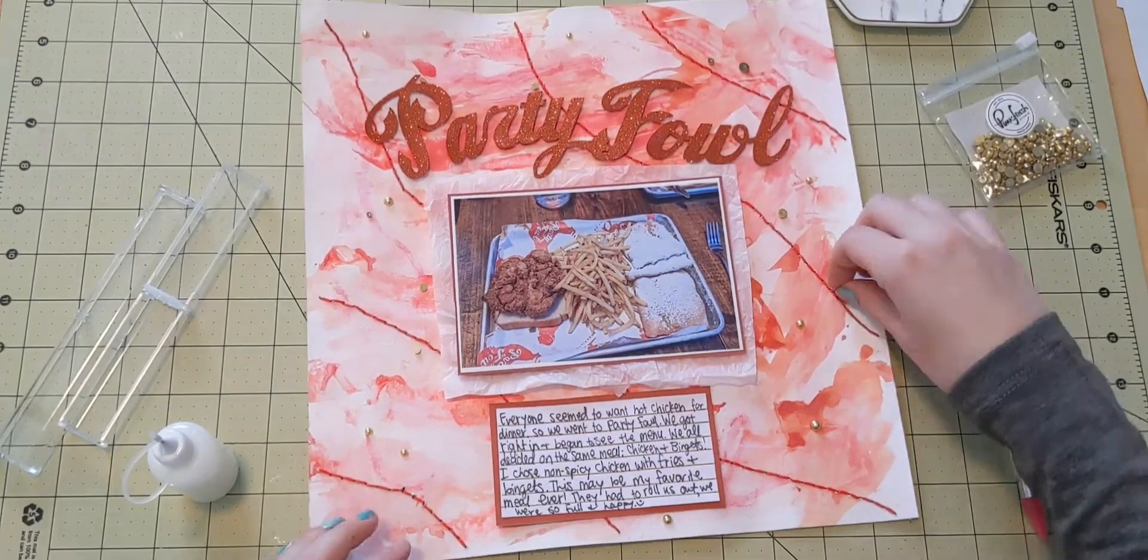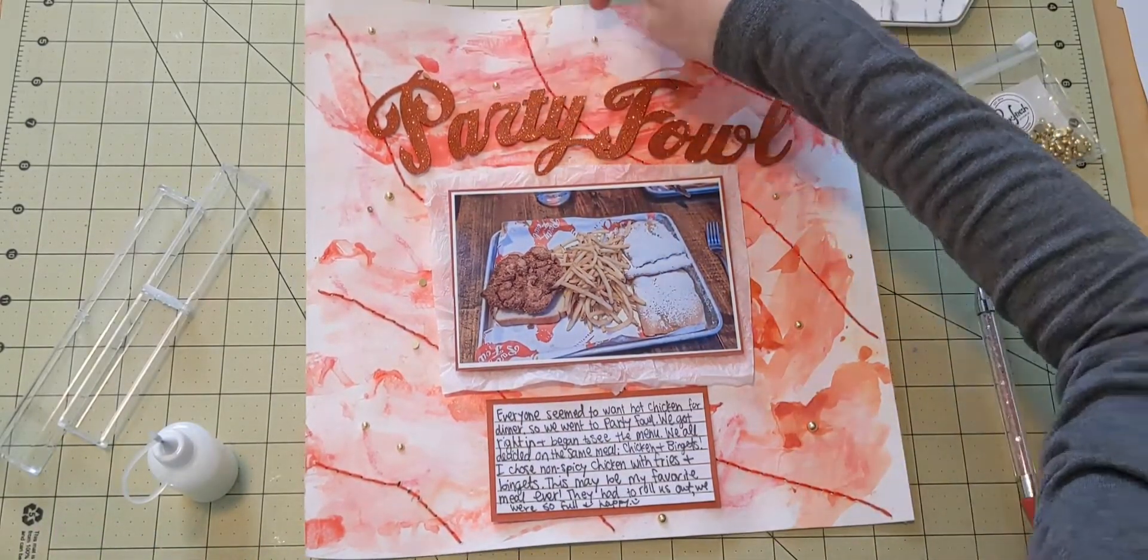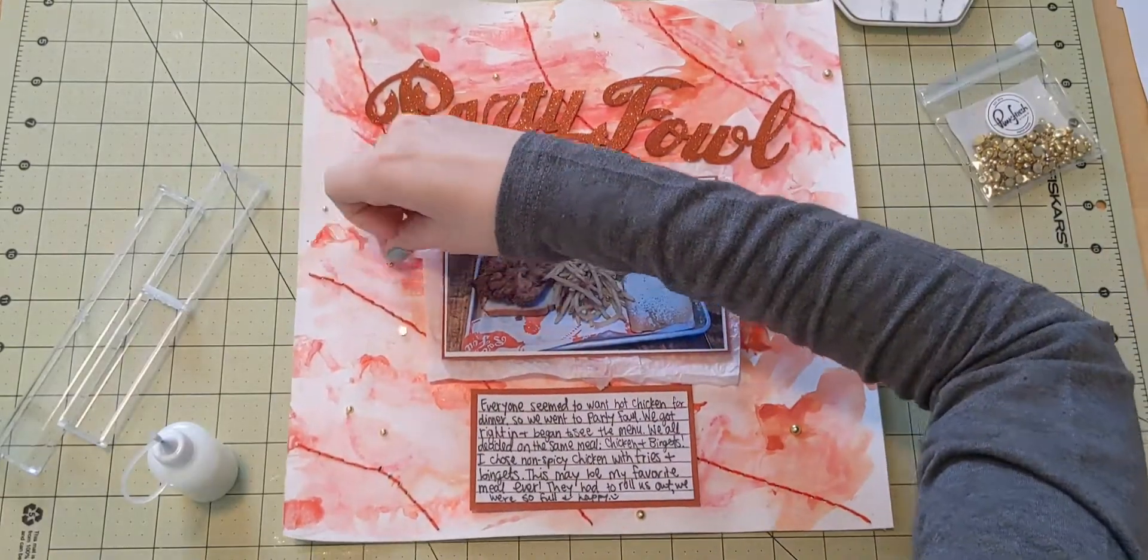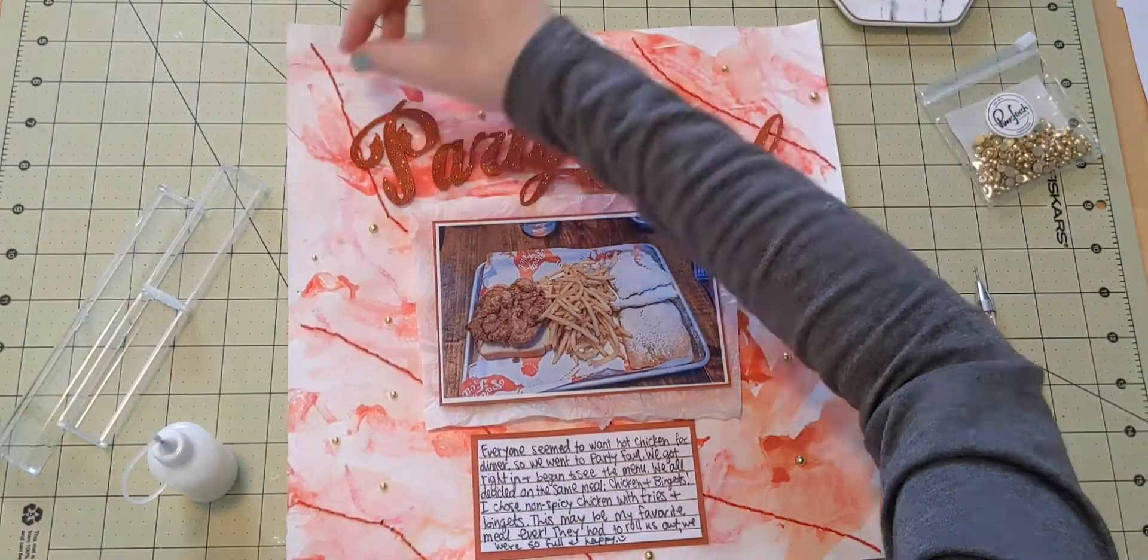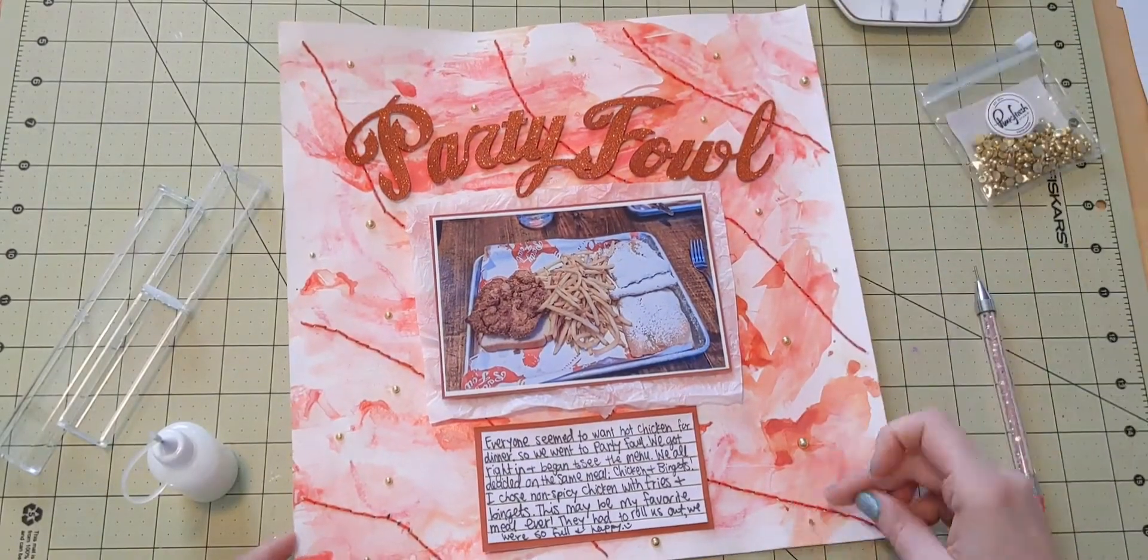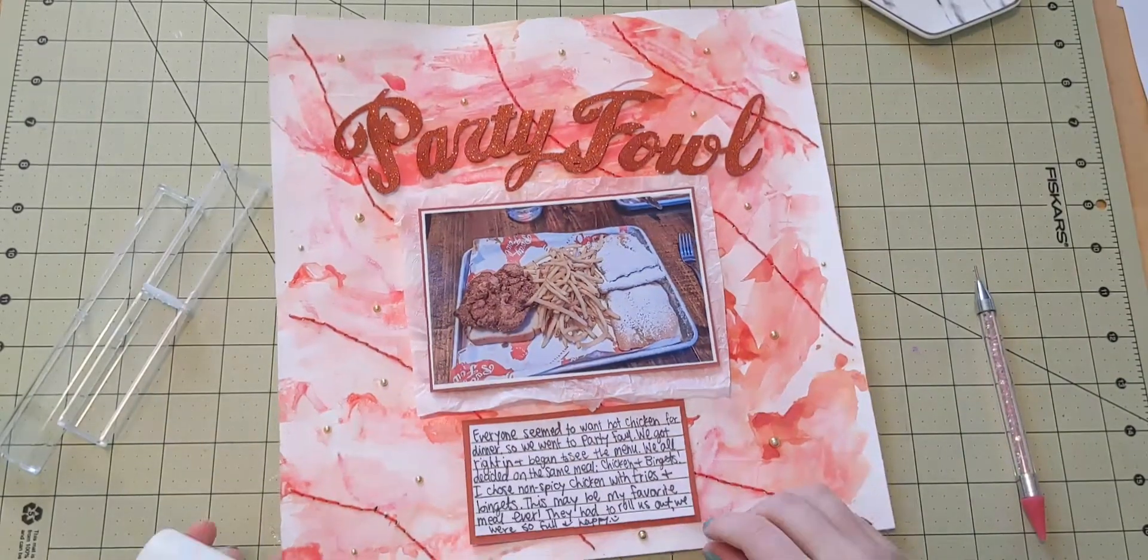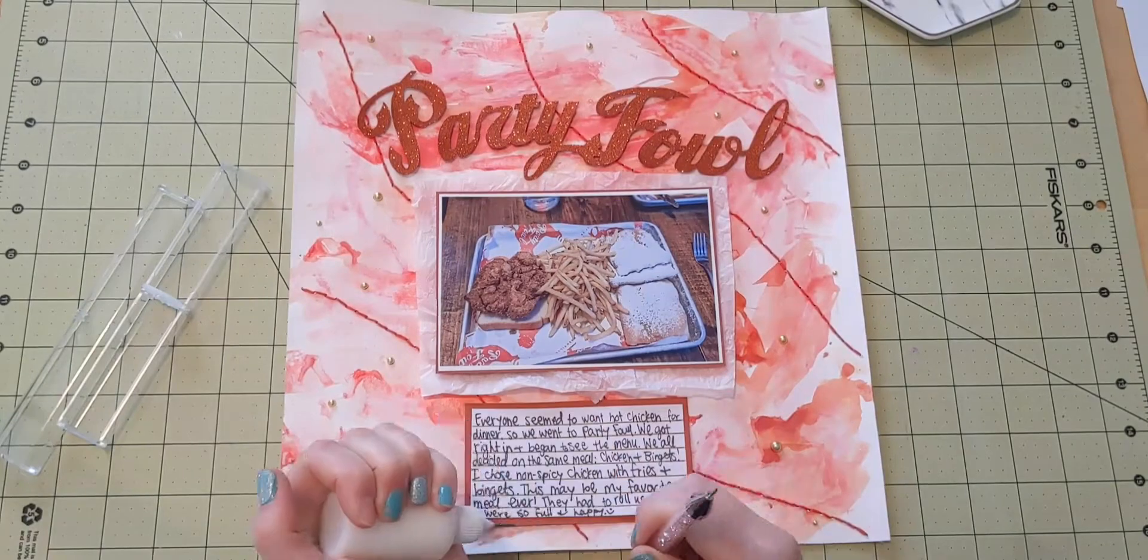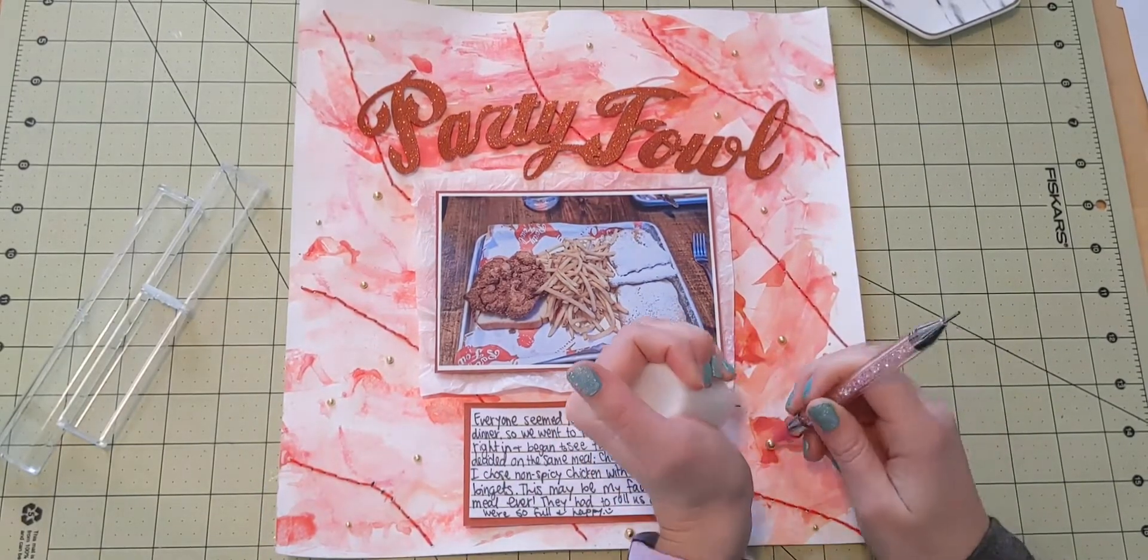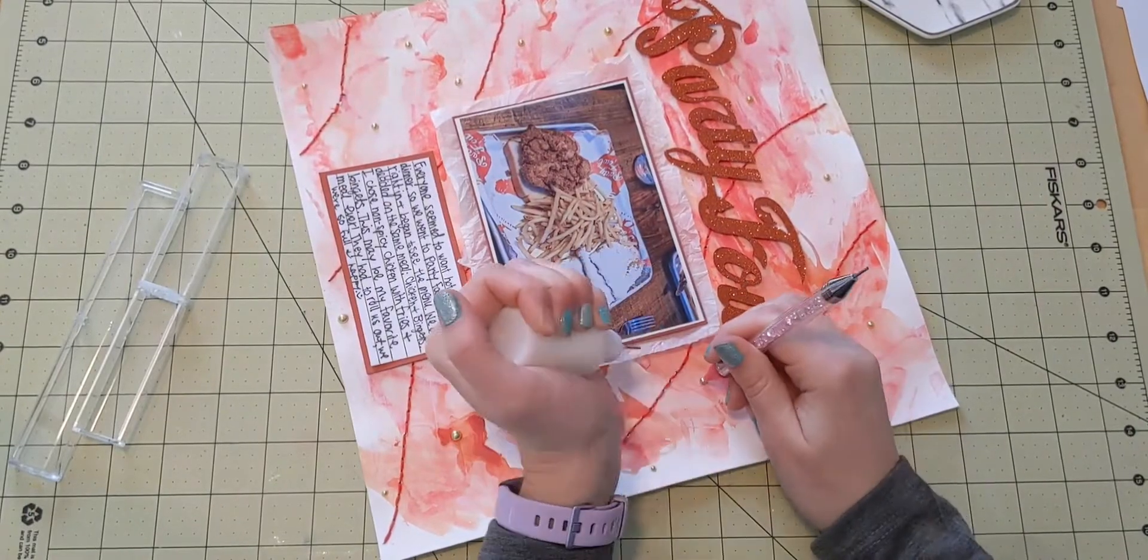And ultimately what I did come up with was using these Pinkfresh Studio Metallic Pearls in gold. So what I really love about these is it's a pouch full of basically non-sticky enamel dots, and they're all gold, and they're in different sizes. I think there are four different sizes in this bag, and they're fantastic. I've used them so much, and I've only had them for like a month. So I kind of sprinkled those around.